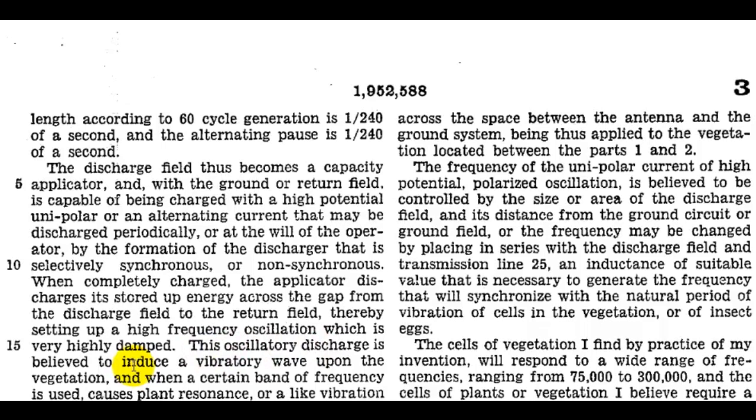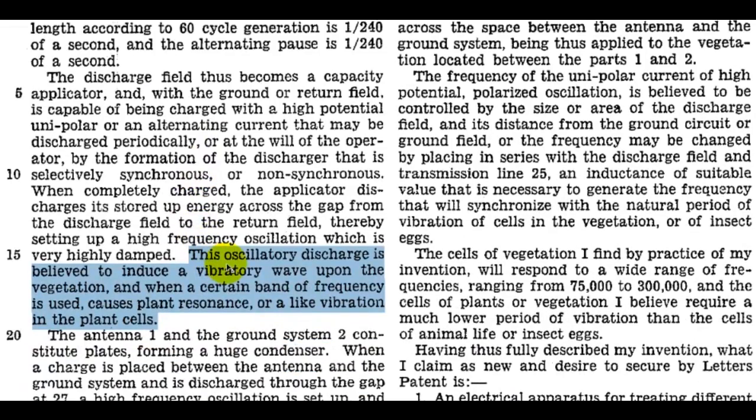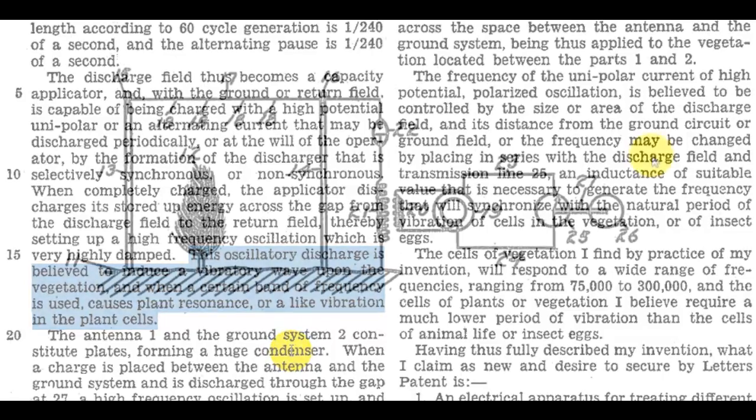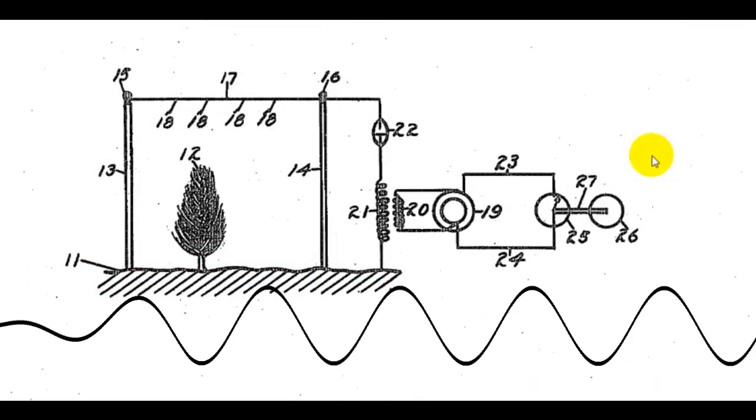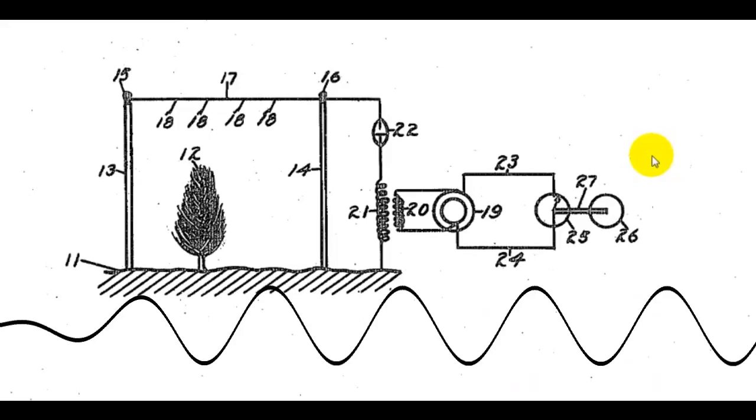I found this passage in Golden's patent very interesting. An oscillatory discharge is believed to induce a vibratory wave upon the vegetation, and when a certain band of frequency is used, causes plant resonance, or a like vibration in the plant cells. So here we find another common thread with early inventors: resonance.